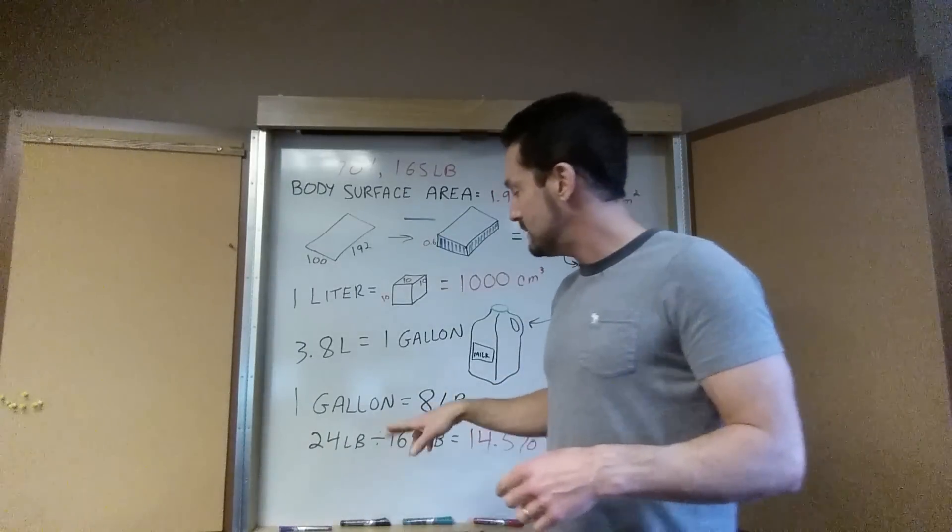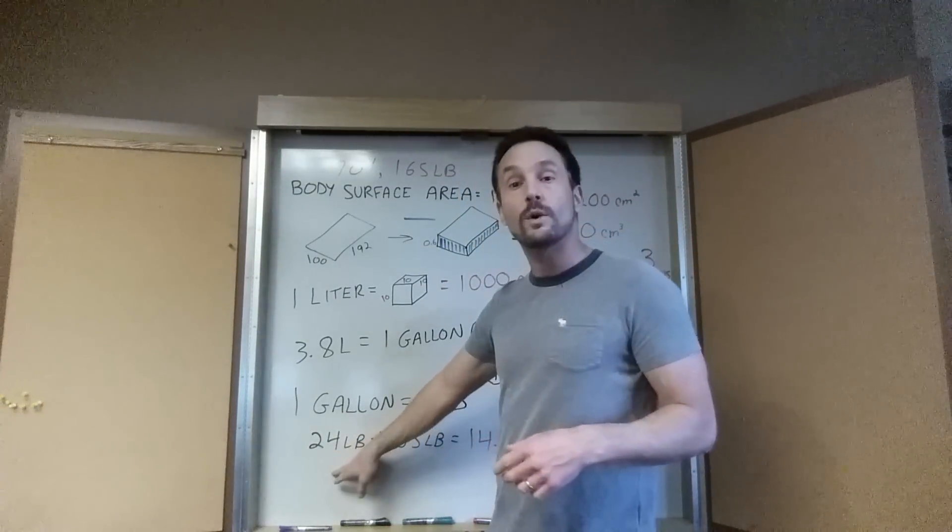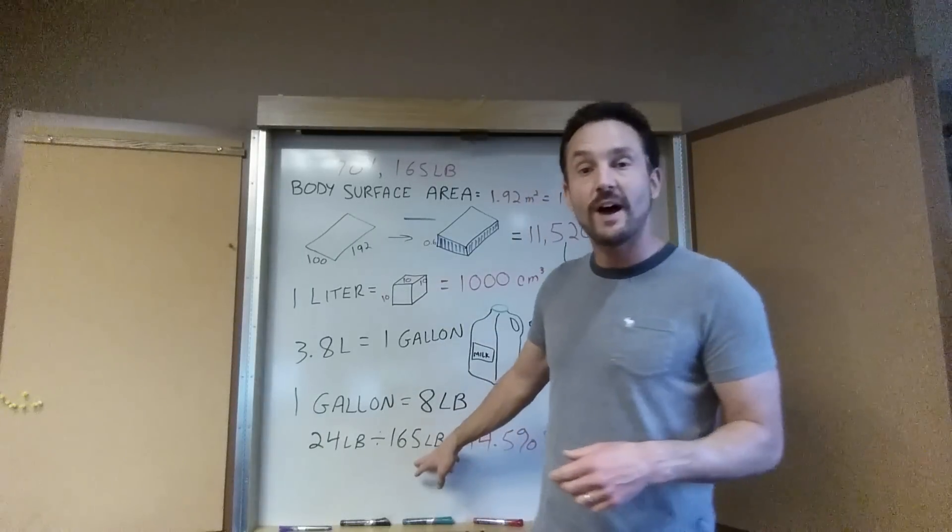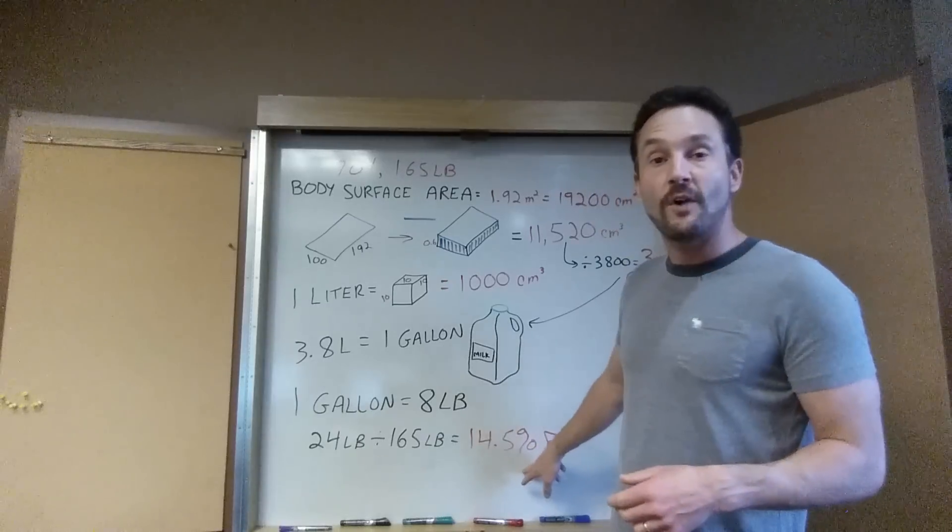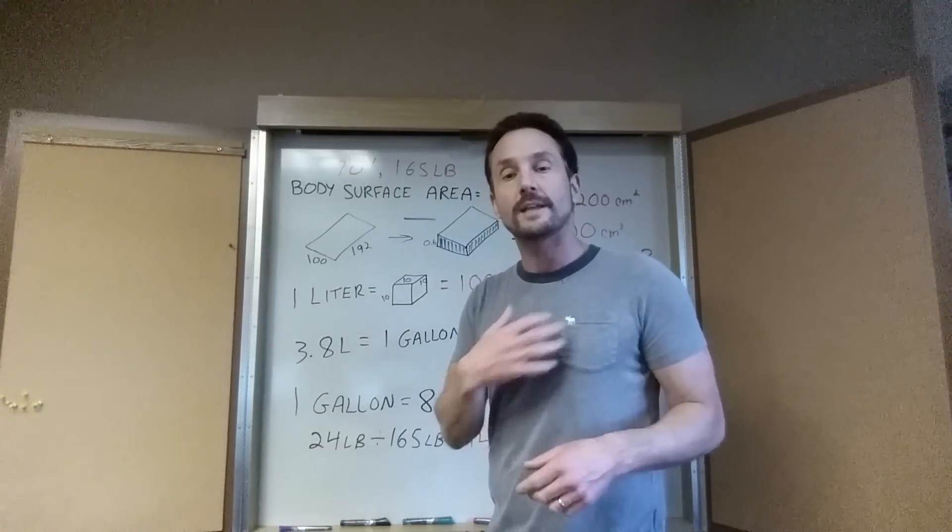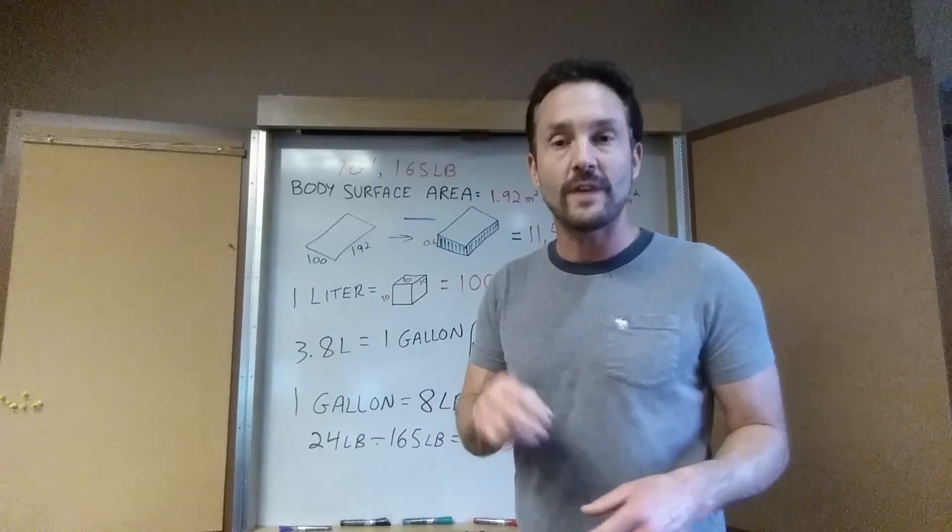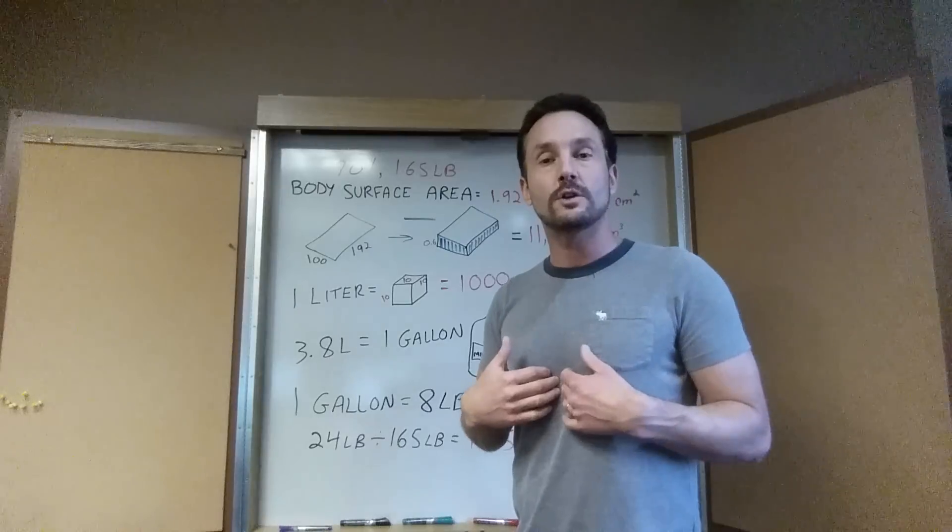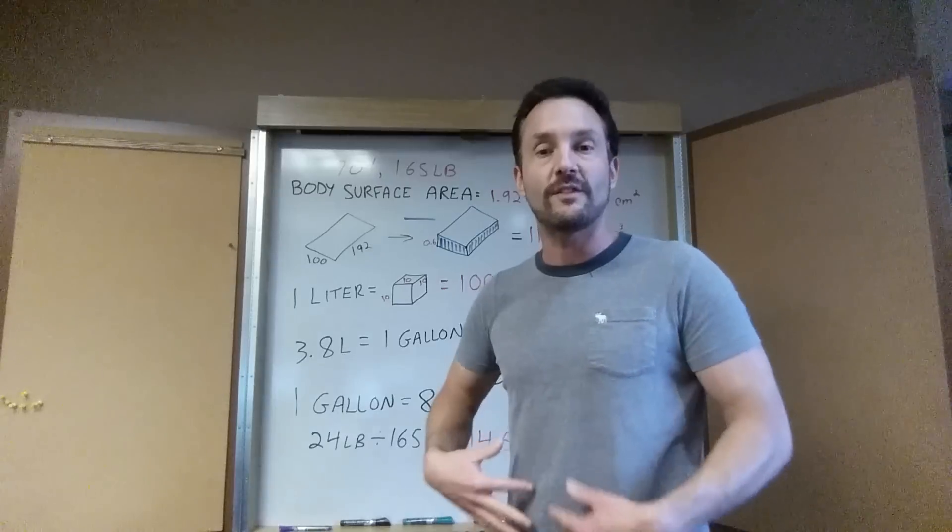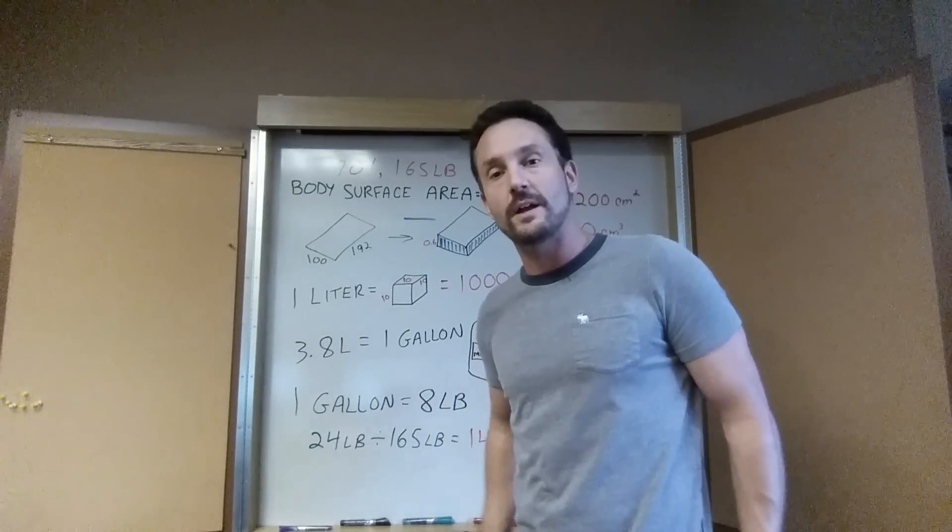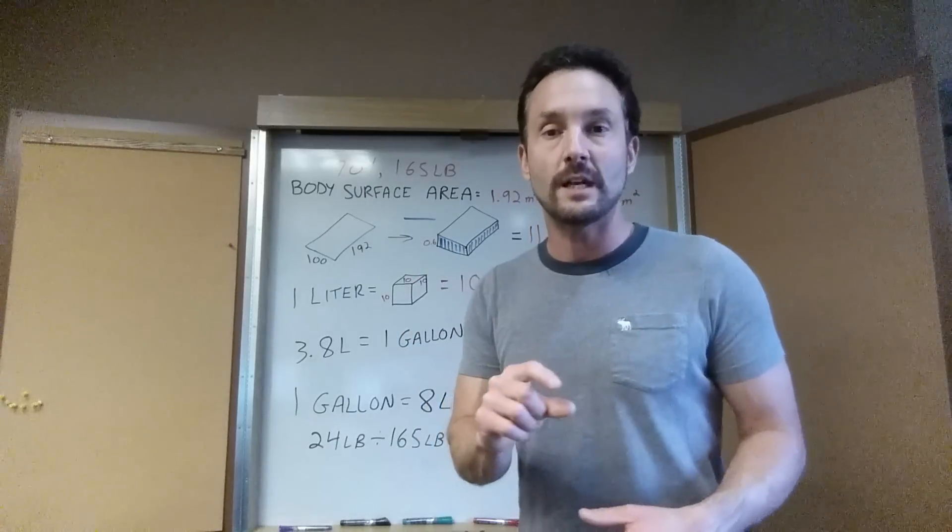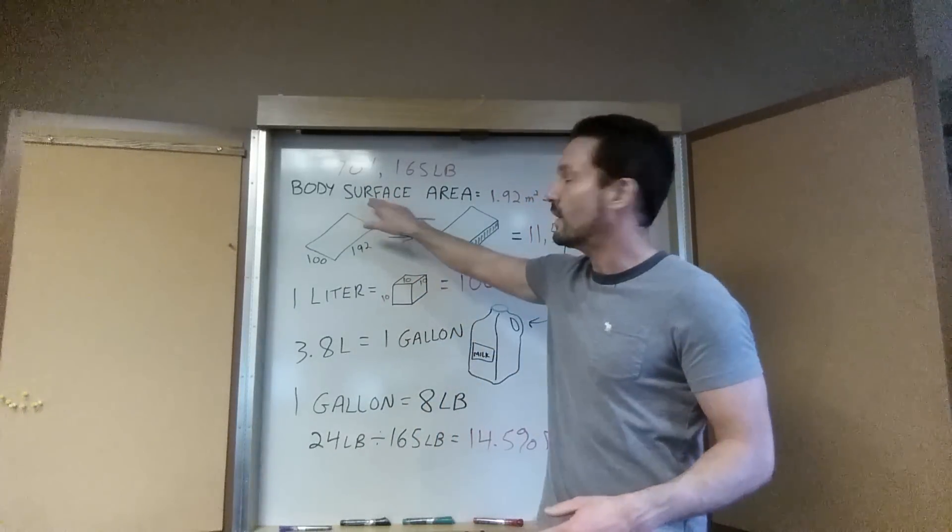We went ahead and divided the 3 gallons that's 24 pounds of fat so I divided 24 into 165 and came up with 14.5% body fat which is pretty close to the 15% estimated by the ultrasound testing. So I've got two different ways you don't have to get ultrasound. You can look at your body and say I've got a half an inch of fat here or I've got two inches of fat there and I've got an inch there and on average I'm an inch thick 2.5 centimeters and plug in the math.